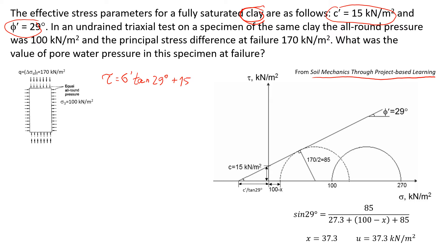This was an undrained test. Before conducting the test, the sample was under all-around pressure — also called confining pressure or sigma 3 — which is 100 kilonewtons per square meter. At some point we switched to undrained conditions and applied deviator stress. The deviator stress at failure, which is sigma 1 minus sigma 3, was 170 kilonewtons per square meter. What we need to find is the pore pressure generated in the sample at the end of the test.